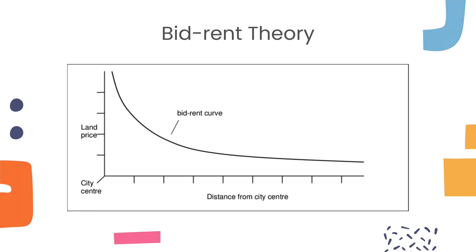So why is land closer to the city more expensive? One theory that explains this is the bid-rent theory. According to the bid-rent theory, people will compete for desirable land closer to the city center, therefore driving up the prices. As more people demand land closer to the city, the price of land will increase.